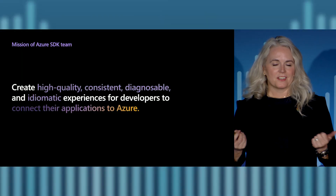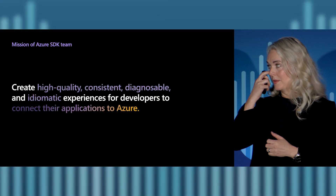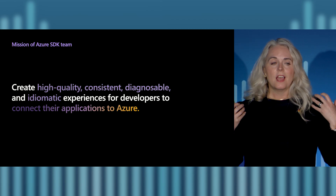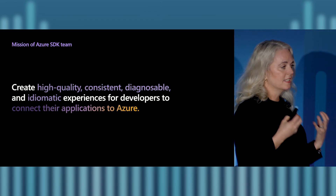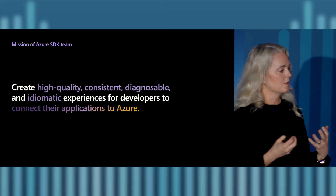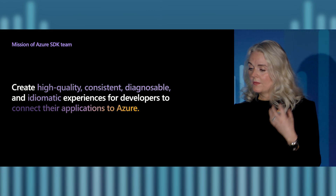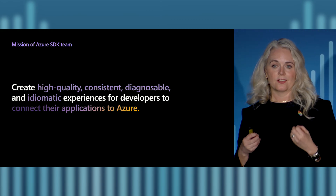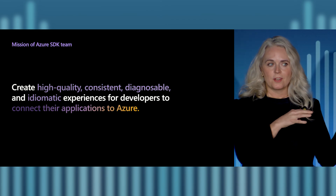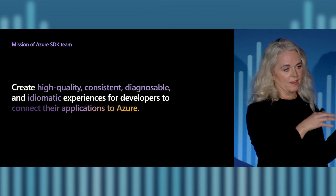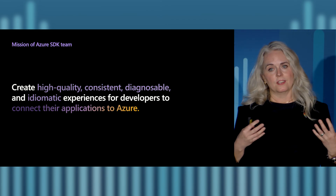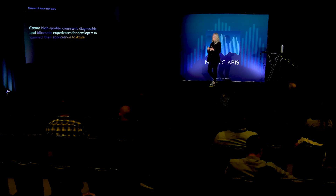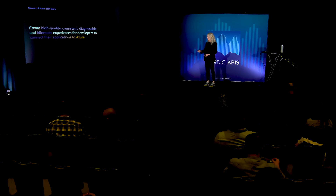I wanted to share a little bit about the Azure SDK team before we get into some of the lessons learned. The goal of our team is to create high-quality, consistent, and diagnosable APIs. We're really focused on building idiomatic experiences for developers to connect their applications to Azure. Like we heard in the first talk around Rust and their drive to be really idiomatic, we have the same goals for our SDKs we build in Azure, but we do it across a bunch of different languages.